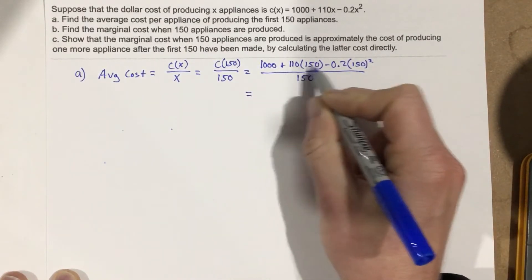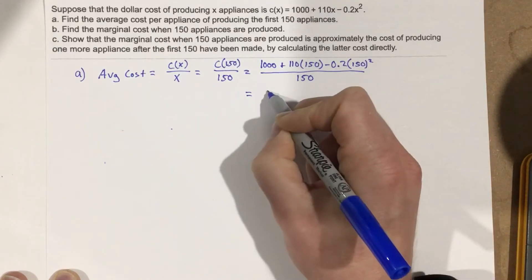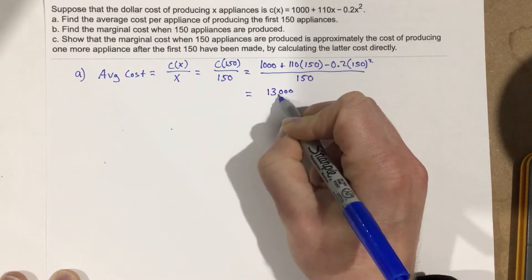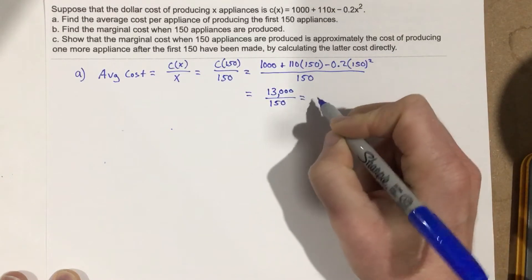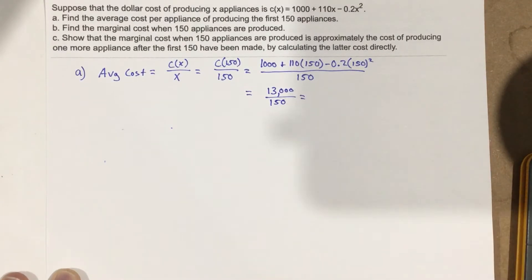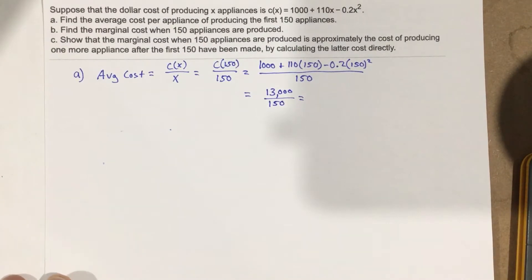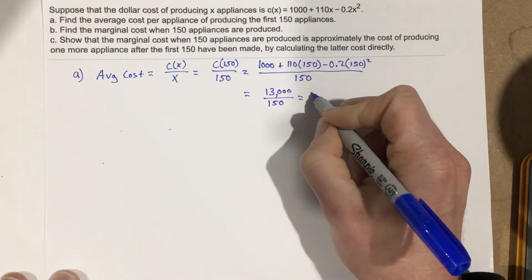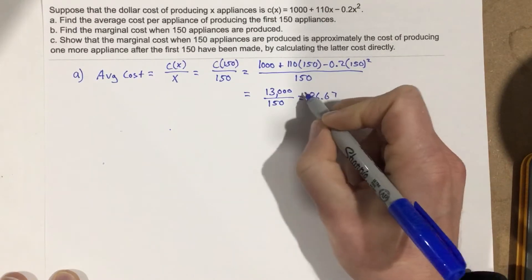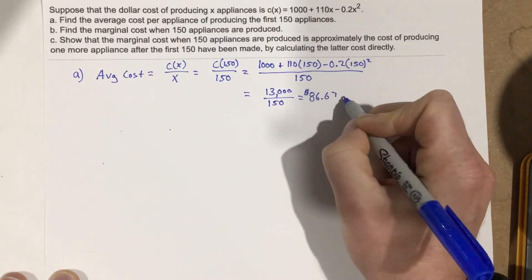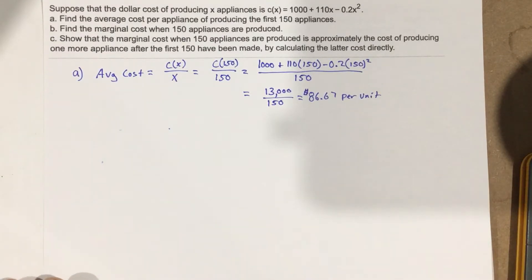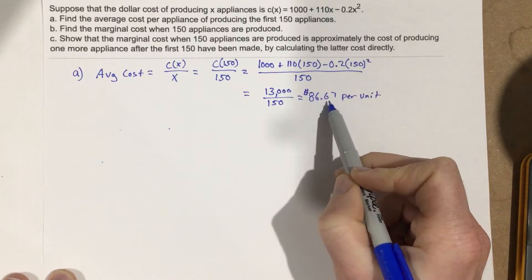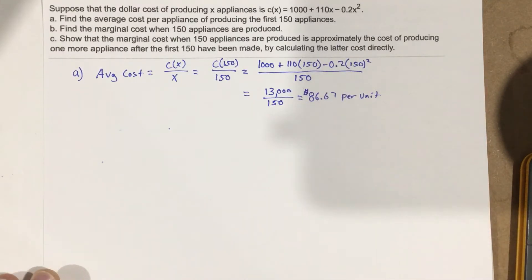When we divide that out and multiply on the top, this gives us 13,000 divided by 150. When we divide that out, we end up with $86.67. So this is $86.67 per unit — that's the average cost per unit for the first 150 units.